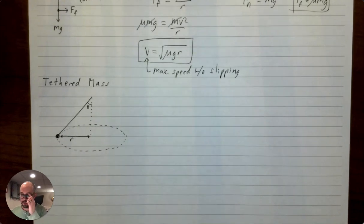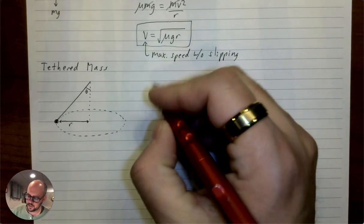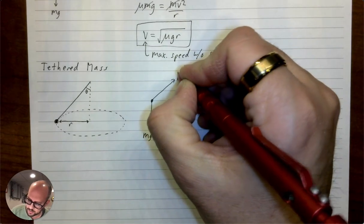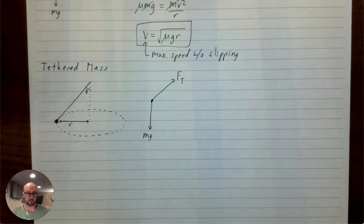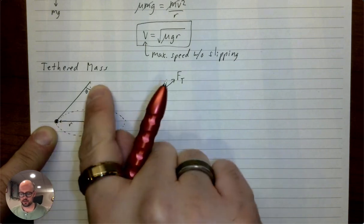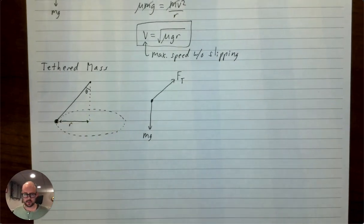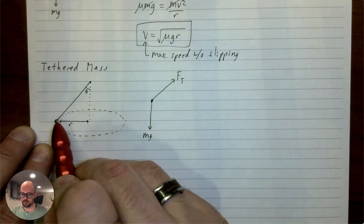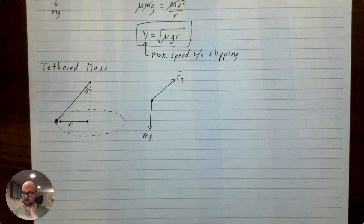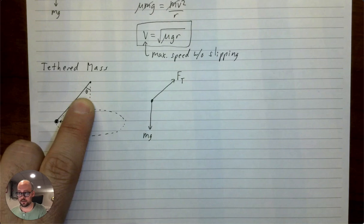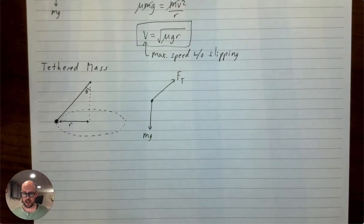Next up is the tethered mass — you've done this one already in a lab, but we didn't go over it. The idea is an object with mass connected to a string being held by someone, moving in a circle. The string traces out a cone, with the object at the base and the string converging at your hand. The diagram shows there's an angle to the string, and that angle must be constant for the object to move in a circle.